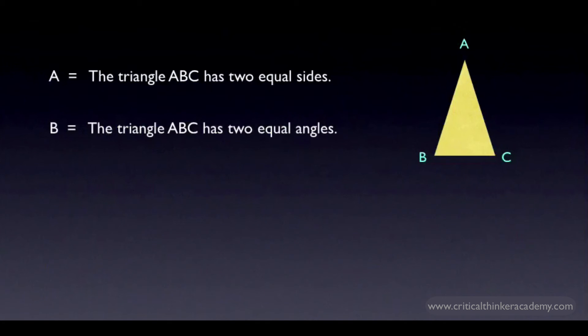The sides AB and AC are equal. From the diagram, you can see this requires that the angles at B and C must also be equal. And it's also clear that the converse is true as well: that if a triangle has two equal angles, then it also has two equal sides.